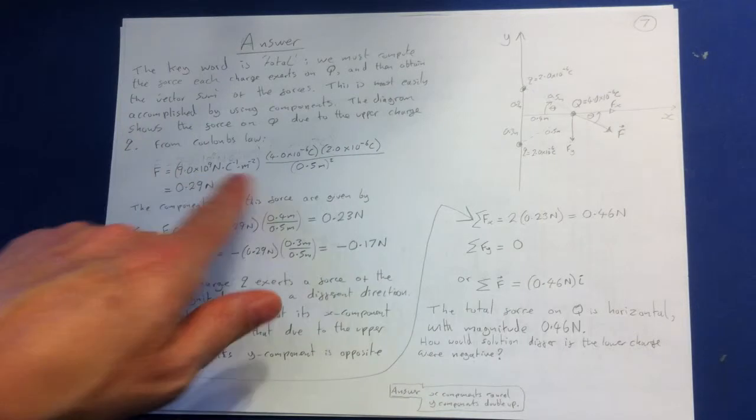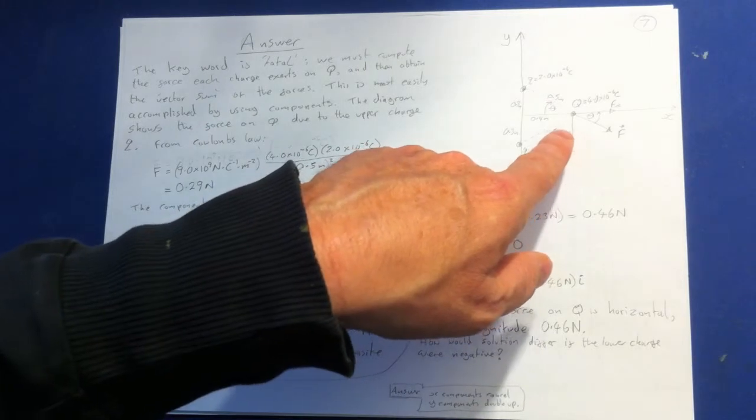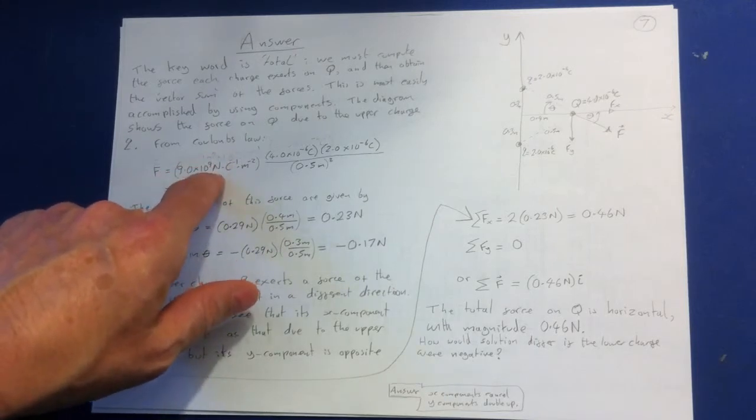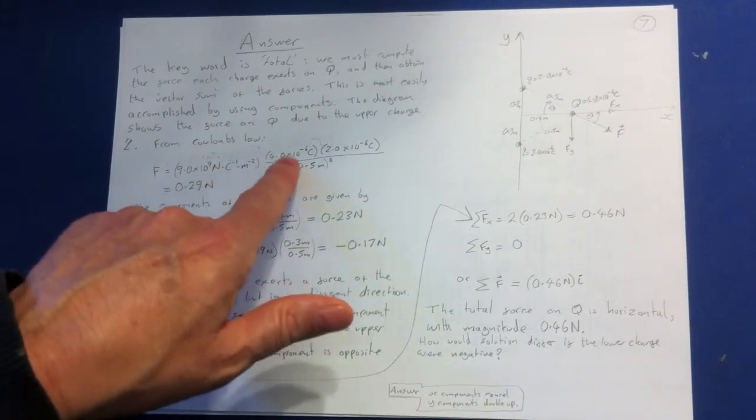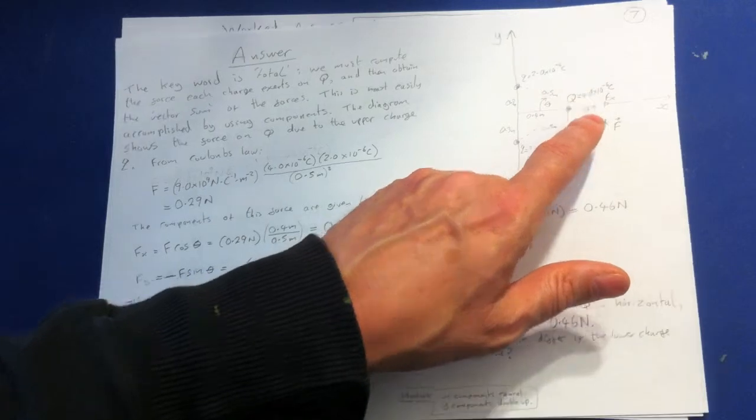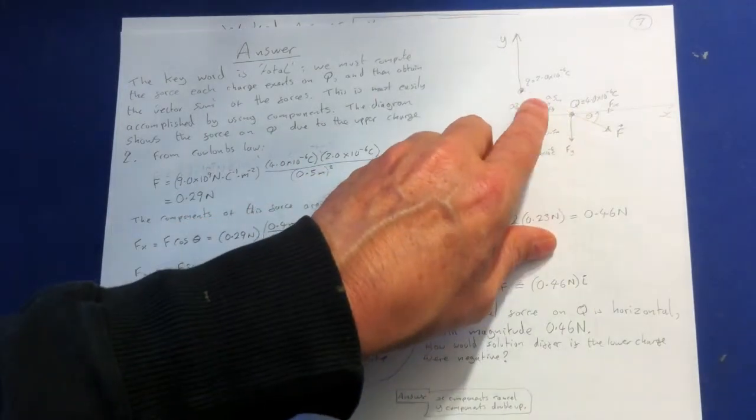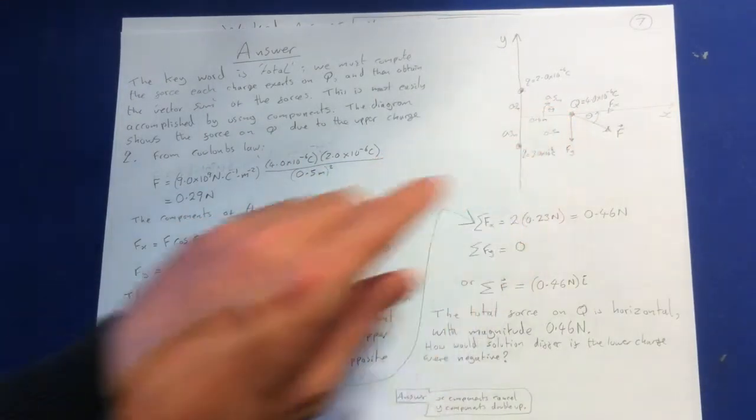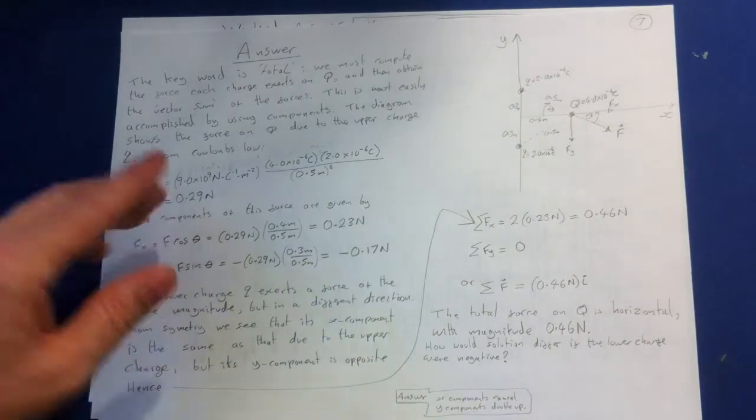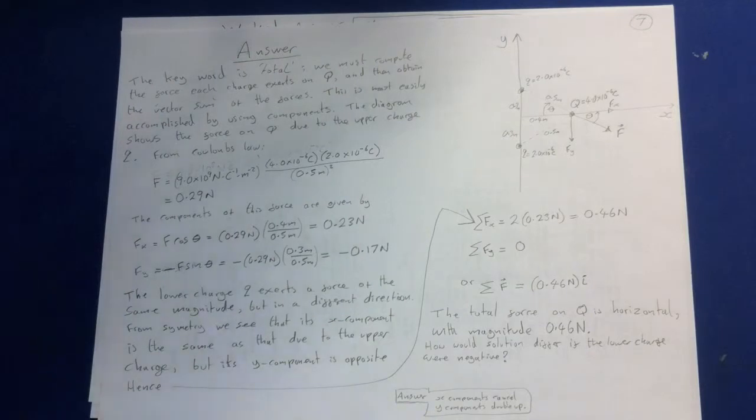the force, this force equals 9 times 10 to the, here we go, 9 times 10 to the 9, this is the K constant of course, newtons per coulomb per meter squared. Then we've got the two charges. So there's the K constant. We've got the two charges. So we've got this charge, which is that, this first one here. Then we have this charge. So we're multiplying those together, and then we're given the distance here is 0.5 meters. So then we square that. That gives us the size of this force. As a scalar quantity, it gives us 0.29 newtons. So that's the size of the force, the scalar quantity.